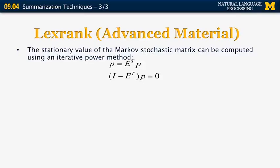And the stationary value of the Markov matrix is computed by that power method. The power method is something very straightforward. P is the vector of values that correspond to the centralities of the nodes. E transpose is the transpose of the connectivity matrix. So if we have the eigenvector formula P equals E transpose P, we can also write this as I minus E transpose P equals zero, where I is the matrix that has ones on the diagonal and zeros everywhere else.